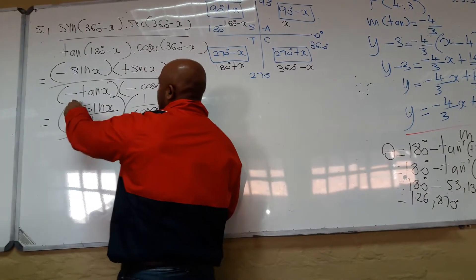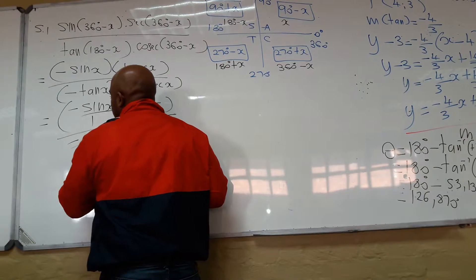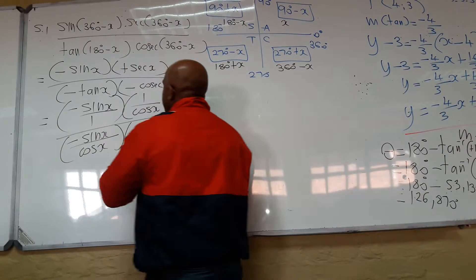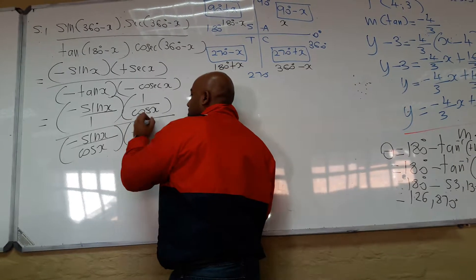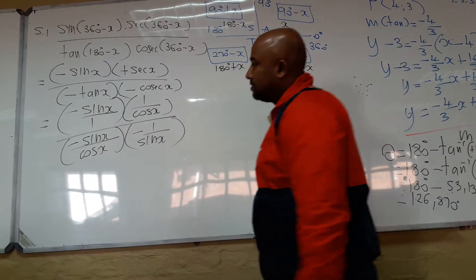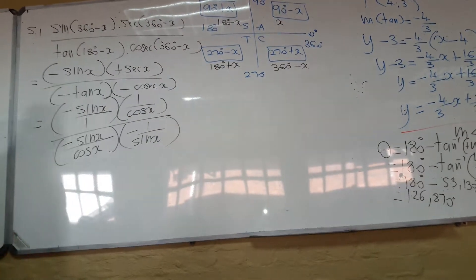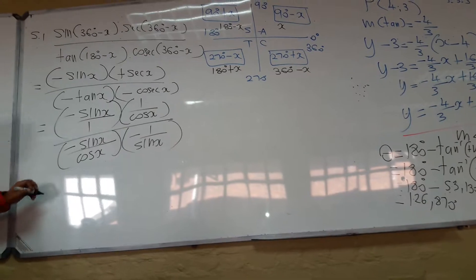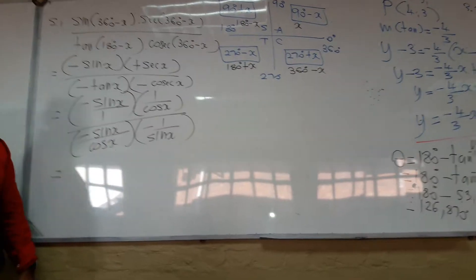In the bottom, minus tan, that is minus sine over cosine there. And I've got minus cosec, which is minus 1 over sine. So we are dealing with fractions now. We need to invert and multiply all the fractions. And let's see what happens.